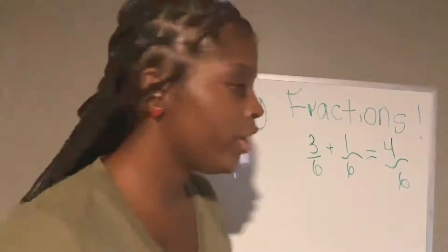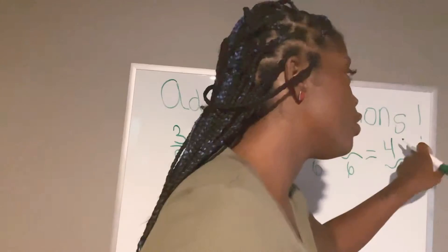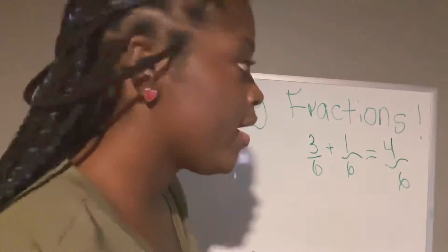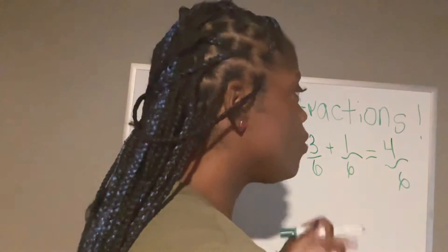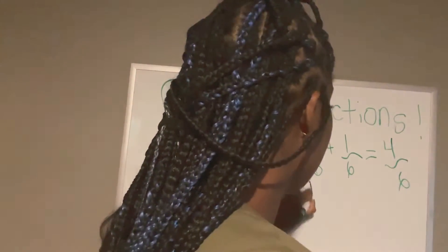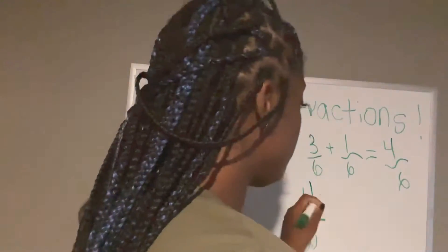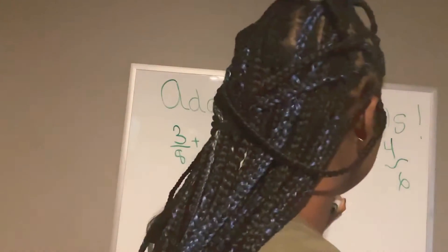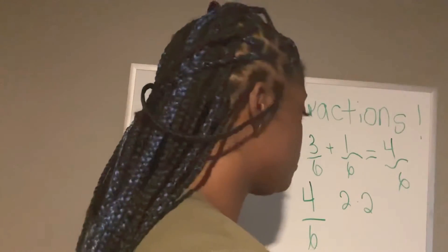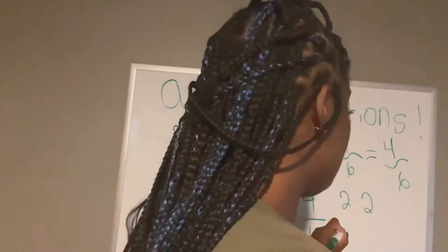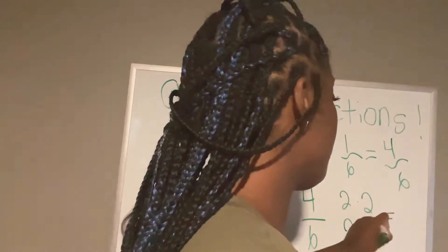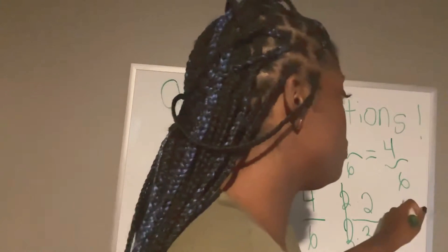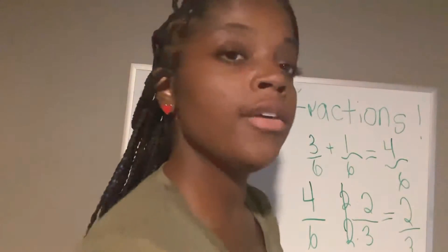Four over six — we could leave it like this. But sometimes they say simplify. When I say simplify four over six, what is a number that can go into both four and six? Two. Two times two is four, two times three is six. So we cross out the twos because they are the same and keep the remaining numbers. That simplifies to two over three.